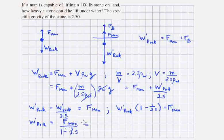The denominator is 0.6. The numerator is 100 pounds, the weight of the rock that he could lift in air. Dividing 100 pounds by 0.6 increases the weight of the rock he can lift to 167 pounds. And that's it.